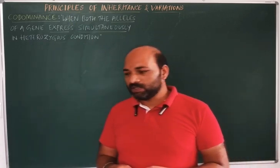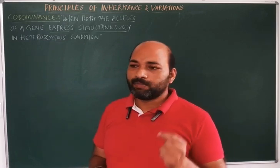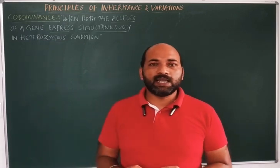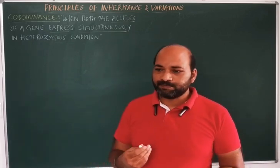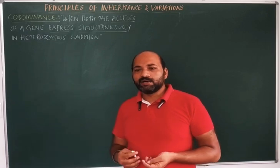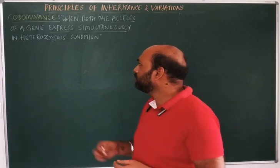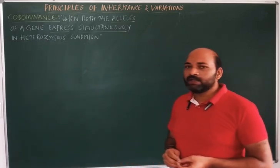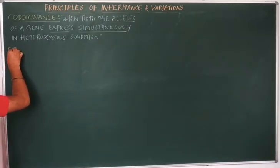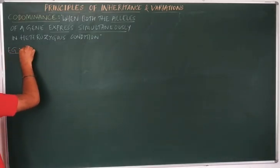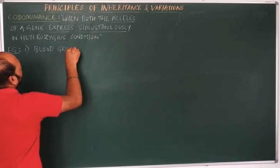To understand co-dominance, we have various examples like blood groups in human beings, sickle cell anemia, MN blood group system, and the coat colour or skin colour in case of the cattle. First we will discuss co-dominance by taking example number one: blood groups in humans.